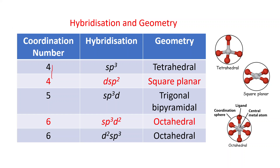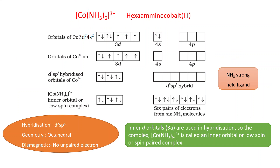If coordination number is 4, hybridization may be sp³ or dsp². If hybridization is sp³, geometry is tetrahedral; if hybridization is dsp², geometry is square planar. If coordination number is 5, hybridization is sp³d and geometry is trigonal bipyramidal. If coordination number is 6, hybridization may be sp³d² or d²sp³, and in both cases the geometry is octahedral, as represented in this diagram.